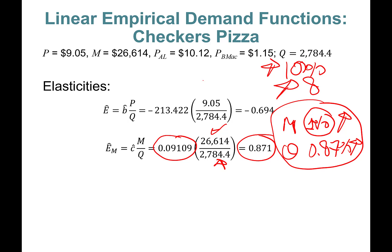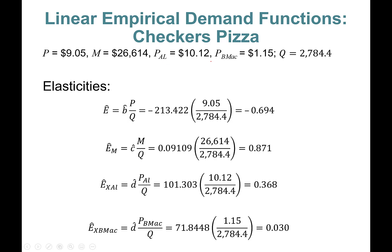Next, you can also calculate the cross-price elasticity of Checkers Pizza with Al's Pizza. What we do is grab the D-hat coefficient, which was 101.303, times the price of Al's pizza, which is $10.12, divided by Q. This number is 0.368, which means a one percent increase in Al's pizza price will cause sales in Checkers Pizza to go up by 0.368 percent. So if Al's Pizza increases their prices by 10 percent, sales in Checkers Pizza will go up by 3.68 percent.